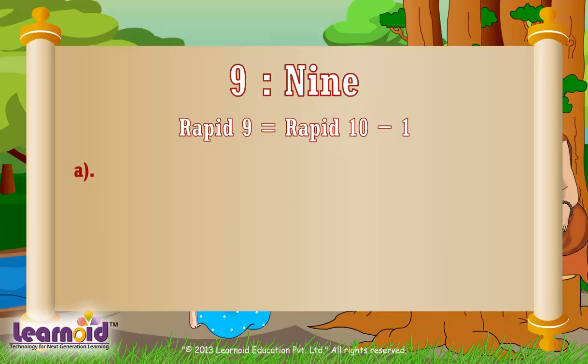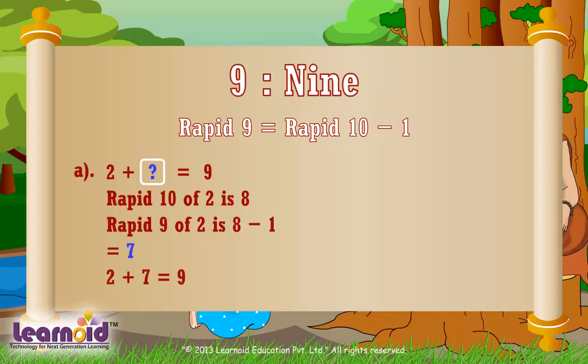For example, what to add to 2 to make 9? Find Rapid 10 of 2 and then subtract 1 from it. Rapid 10 of 2 is 8. Rapid 9 of 2 is 8 minus 1 equals 7. So 2 plus 7 equals 9.